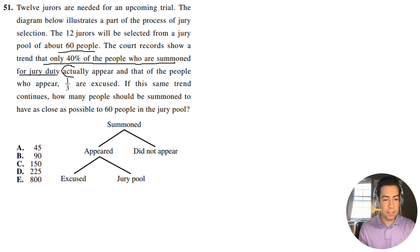Now, it says that of those that actually appear, one-third of them are excused. So they're like, yeah, you know what, we don't think you're cut out for this, right? If this same trend continues, how many people should be summoned to have as close as to 60 people in the jury pool?